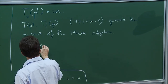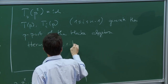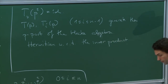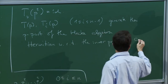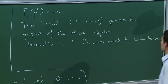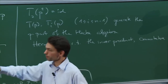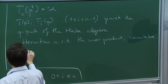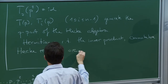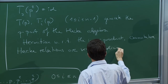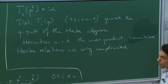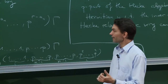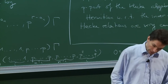These operators have some nice properties: they are Hermitian with respect to the inner product we defined, they are commutative, and by the Chinese remainder theorem everything is multiplicative. So if I take two different primes, everything is nicely multiplicative. But if I stay with one prime, then the Hecke relations become very complicated.